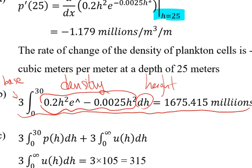Three times the integral from 0 to 30 dh is basically the volume of this column. Because it's a 3D problem where we need to calculate the number of cells, we multiply volume by density. We put density inside the integral, plug it into the calculator, and get that the number of plankton cells from 0 to 30 is 1,675.415 million.